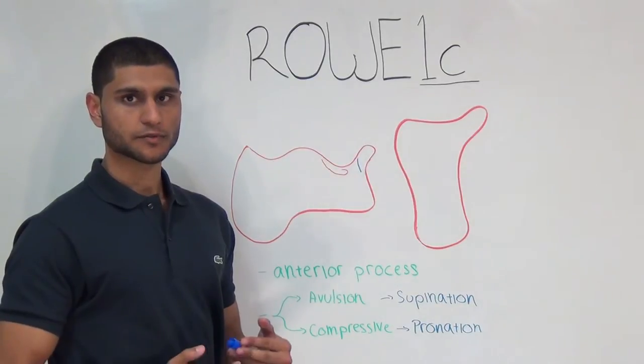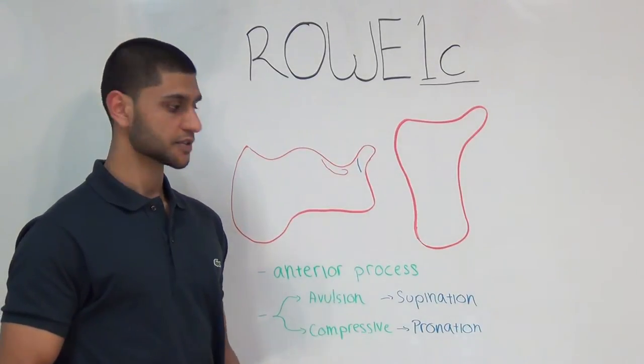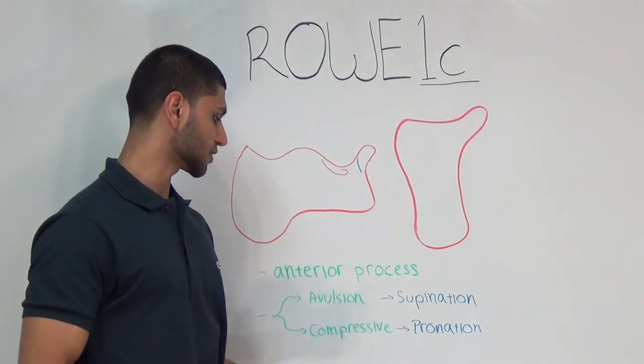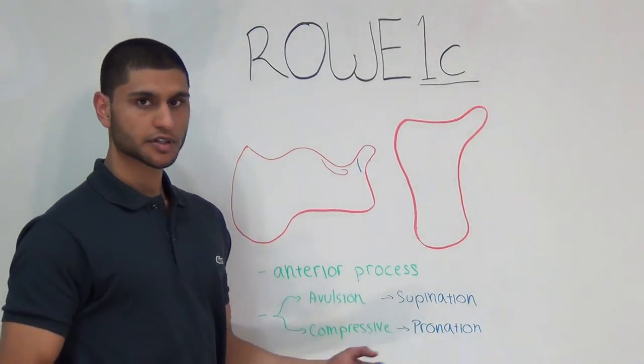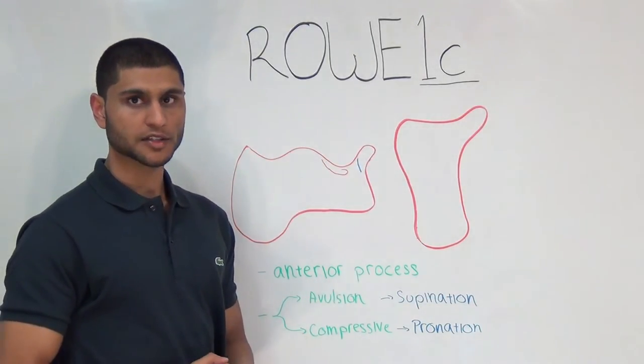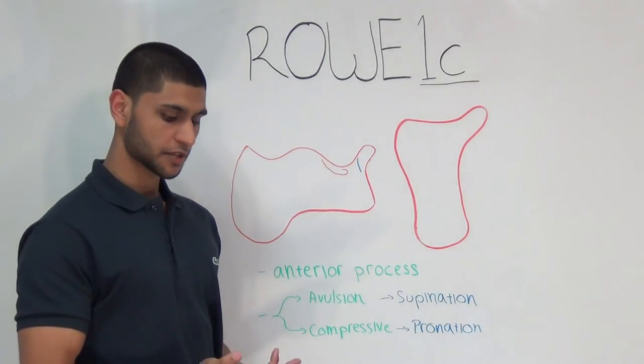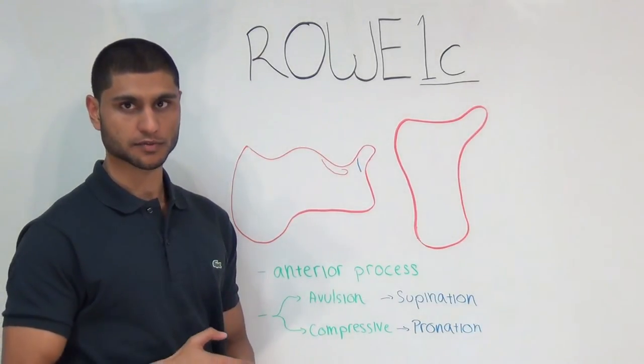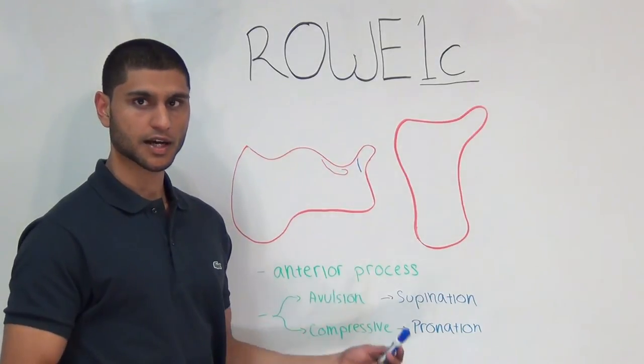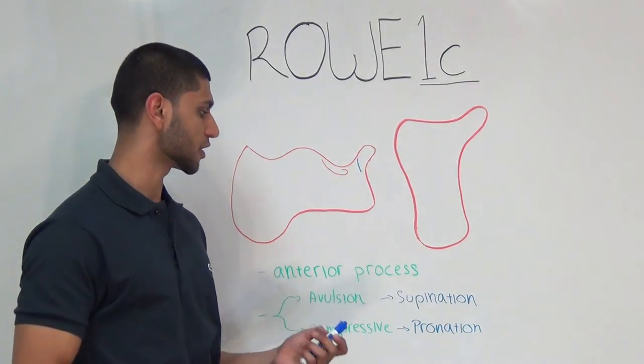Rowe 1c is a fracture of the anterior process. There are two types: avulsion and compressive. Avulsion occurs when the foot is supinated and is due to pull of the bifurcate ligament or the extensor digitorum brevis muscle belly, and is more common in females, especially when wearing very high heels.